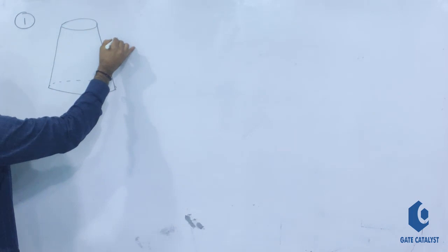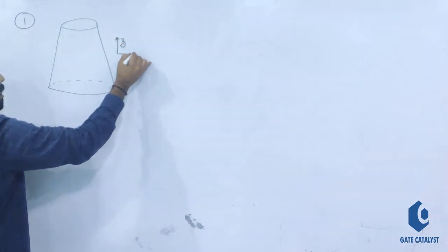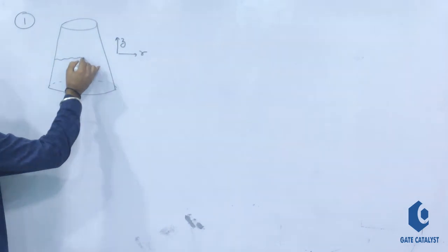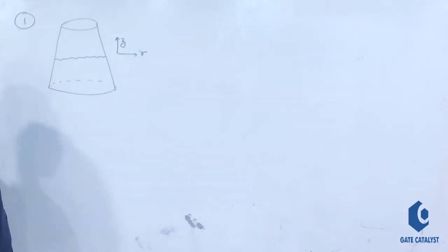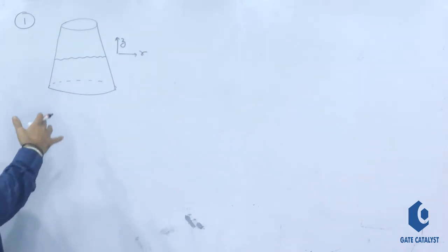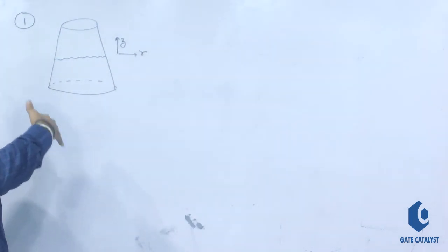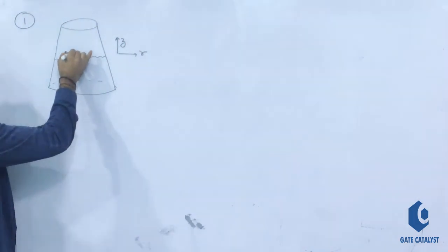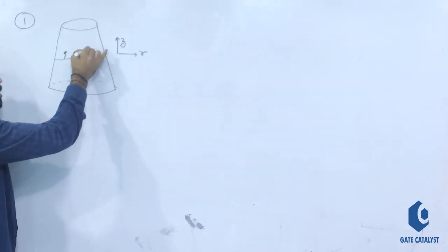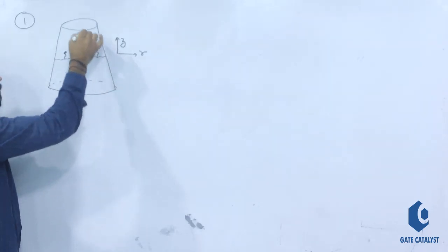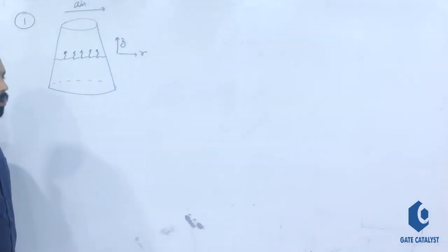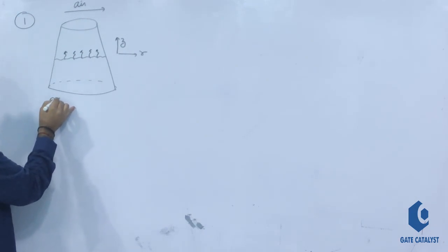This direction is direction Z and this direction is direction R. In this vessel, water is filled up to some height, and at the ambient temperature the water is getting evaporated in the upward direction. The water molecules are diffusing in the Z direction. Air is flowing over it and carrying the water molecules away.